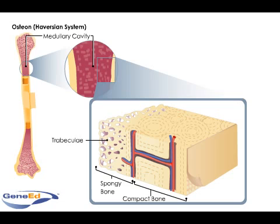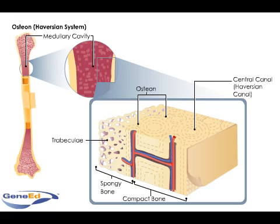Densely packed cylindrical structural units called osteons, or Haversian systems, constitute compact bone, and in a long bone lay parallel to the long axis. A central canal, or Haversian canal, lies in each osteon and contains perforating canals, or Volkmann's canals, that branch out at right angles. Haversian canals contain blood vessels and nerves, and small branches stem off into the perforating canals to connect to the periosteum's blood and nerve supply.